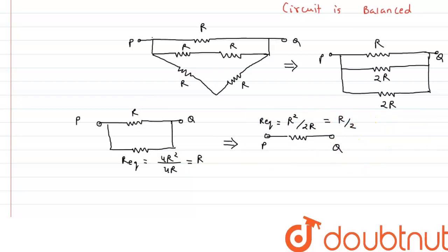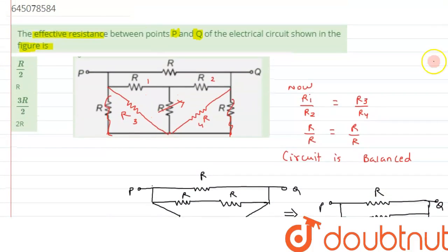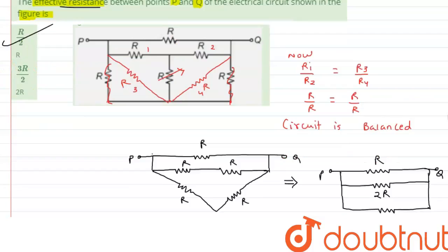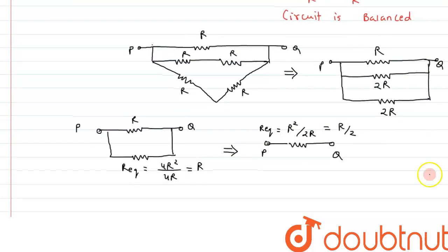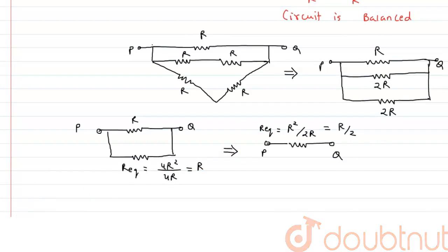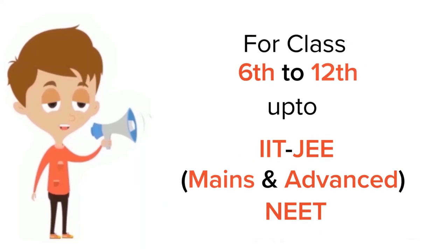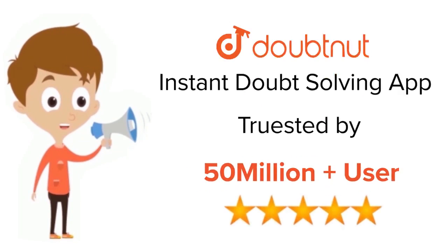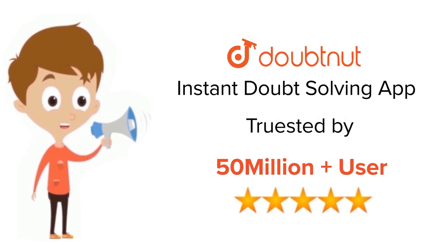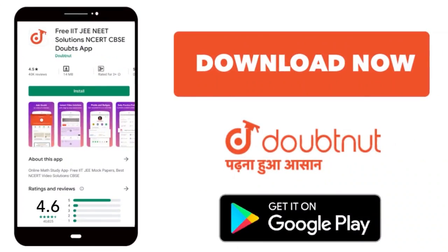The effective resistance between points P and Q is R/2. I hope you understood the concept well. Thank you for watching. For classes 6–12, IIT JEE, and NEET level — trusted by more than 5 crore students — download DoubtNet today.